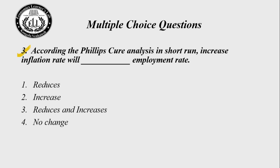Question number three: 30 seconds — try to solve yourself, after that I will explain. Time up. According to the Phillips curve analysis, in the short term an increase in inflation rate will — blank — the employment rate. Choice 1: reduces; Choice 2: increases; Choice 3: reduces and increases; Choice 4: no changes. Note this question asks about employment rate, not unemployment rate. So the right answer is choice number two: increases.